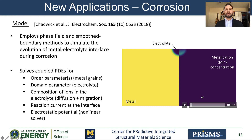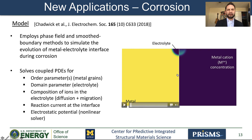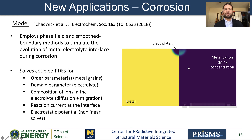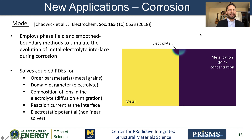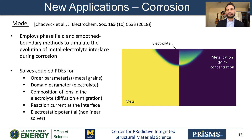Now I'm going to show a movie of a simulation where, starting from a small pit, the corrosion front advances into the metal. We are showing the system in two parts. On the left panel, we show the motion of the metal-electrolyte interface, and on the right side, we show the concentration of metal cation being dissolved from the metal into the electrolyte. As you can see from the right panel, the concentration of this ion is larger at the bottom of the pit, and as a consequence, the front starts to slow down in the middle of the pit compared to the sides as the simulation progresses.